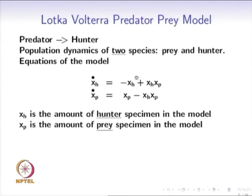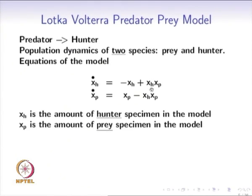Left to itself, the hunter species would just decrease. But for each interaction between xh and xp, the hunter eats the prey, and this causes an increase in the hunter population. The hunter population decreases because of its own population and increases because of its interaction with xp. The rate of increase is proportional to both xp and xh population — it is bilinear, equal to their product.